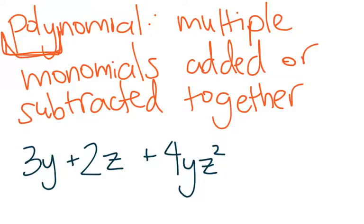A polynomial has multiple monomials added or subtracted together. For example, 3y, that's a single term monomial, plus 2z plus 4yz squared. This is a polynomial because there are multiple monomials being added together.